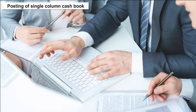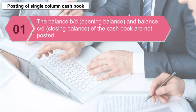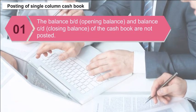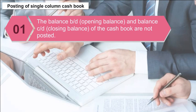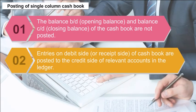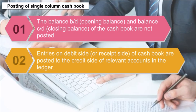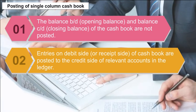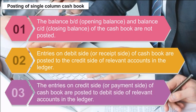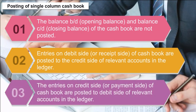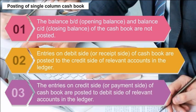Posting of Single Column Cash Book: The balance brought down (opening balance) and balance carried down (closing balance) are not posted. Entries on the debit side or receipt side are posted to the credit side of relevant accounts in the ledger. Entries on the credit side or payment side are posted to the debit side of relevant accounts in the ledger.